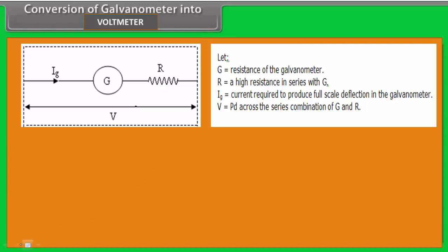The conversion of galvanometer into voltmeter: the galvanometer can be converted into voltmeter by connecting a suitable high resistance in series with the galvanometer. In this diagram, G is the resistance of the galvanometer, R is the high resistance in series with the galvanometer, and Ig is the current required to produce full scale deflection in this galvanometer.